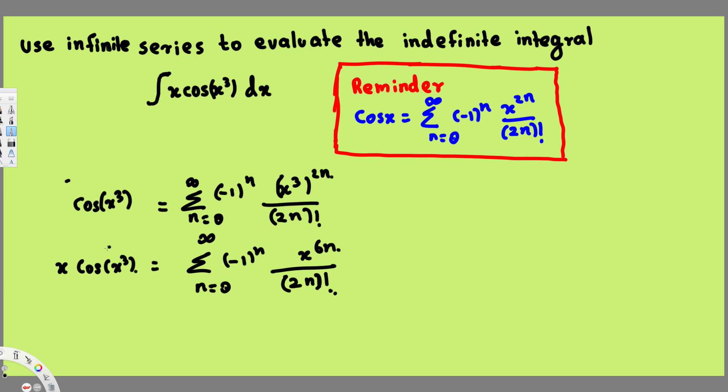Now we have multiplied cos(x³) by x. So on the other side we have to do the same thing. We have to multiply this one with x.